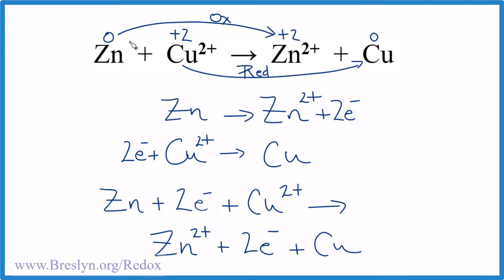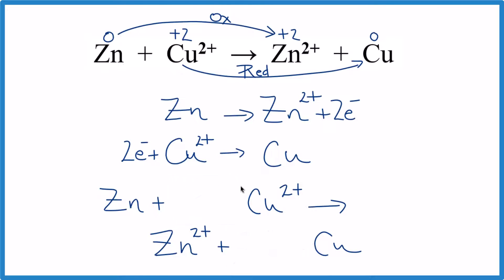This is the redox reaction for zinc plus the copper 2 ion. Since we have electrons on both sides, two electrons here and here, cancel those out. Get rid of that. And we'll clean it up.